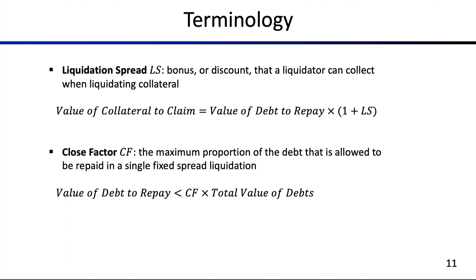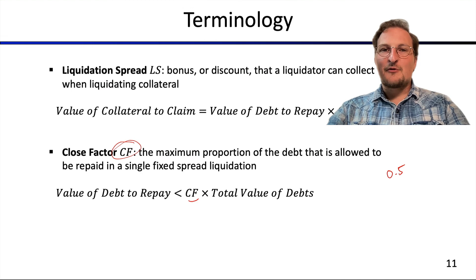To give you some further information: the value of the debt to repay should always be inferior to the close factor times the value of the debt. This close factor is mostly set as a constant — it's like 0.5 in Aave — so 50%, which is quite significant and not in the interest of the borrowers in general. I hope this terminology will help you to speak the same language and to synchronize efficiently with your peers.